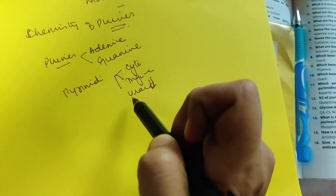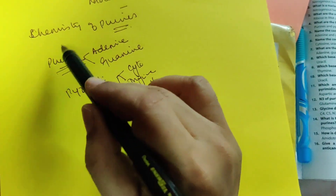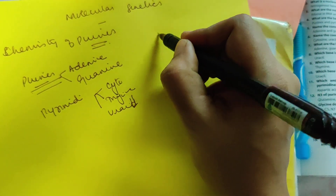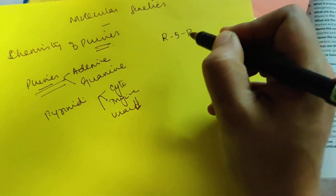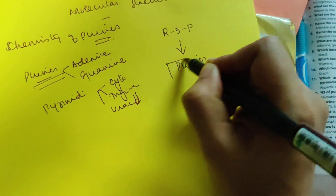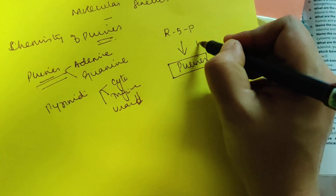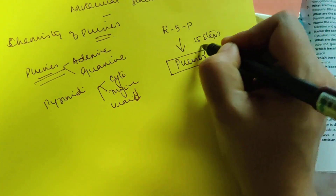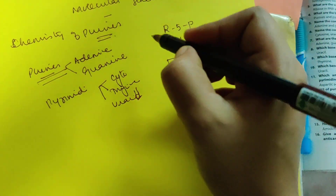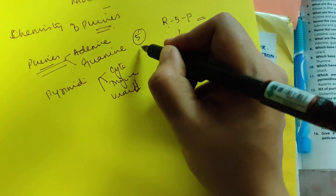Purines are adenine and guanine; pyrimidines are cytosine, thymine, and uracil. Now, the structure of purines is built in 15 steps. In these 15 steps, ribose 5-phosphate gets converted to purines.